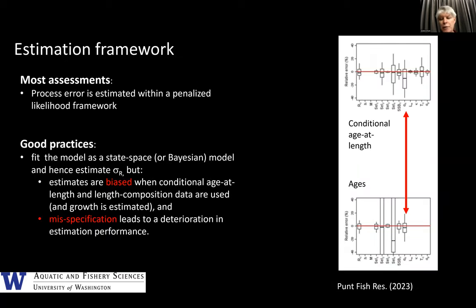On the estimation framework: most — in fact all — assessments I looked at were estimated within a penalized likelihood framework, essentially fixing sigma-R and estimating the deviations. The best way to go is to move to either a state-space or Bayesian approach and allow sigma-R to be estimated. That said, I did some simulations for the CAPAM good practices workshop and found that when fitting to length data there's still a tendency to underestimate sigma-R — you can see some negative bias in the upper panel with the arrow. With ages it's pretty good. And your ability to estimate sigma-R and most other parameters deteriorates when there is model misspecification.